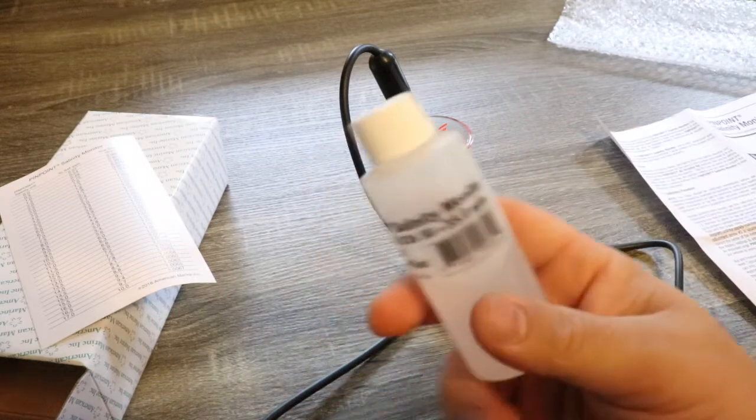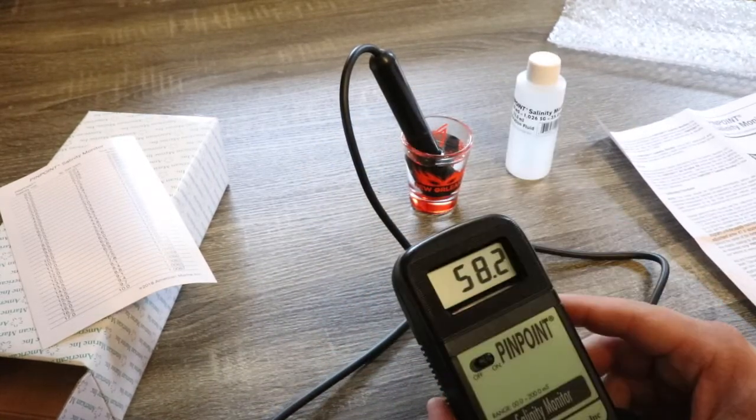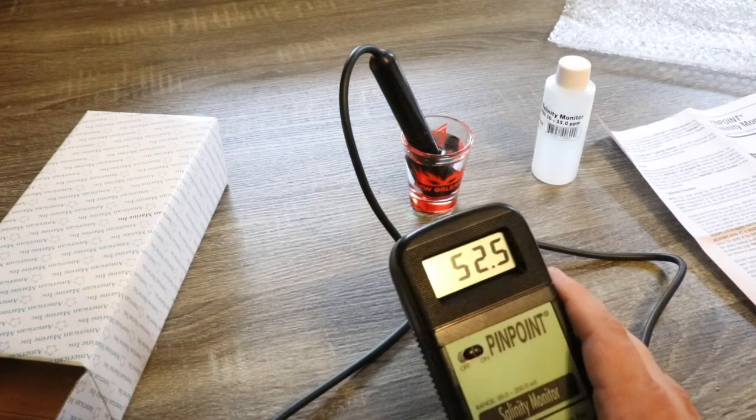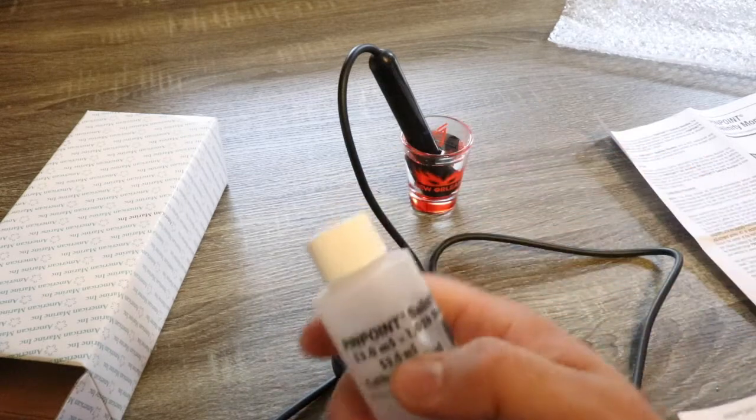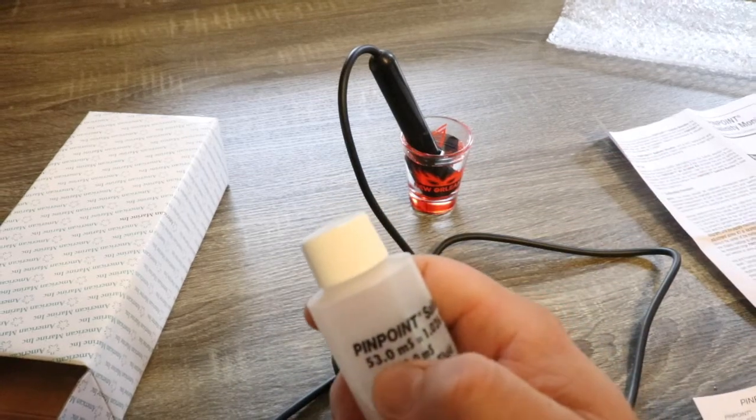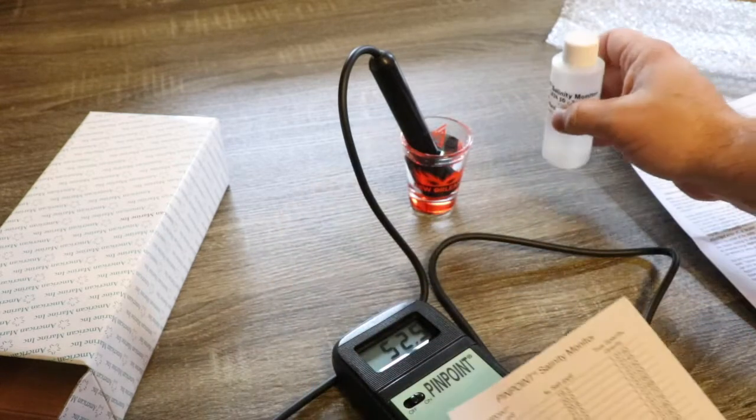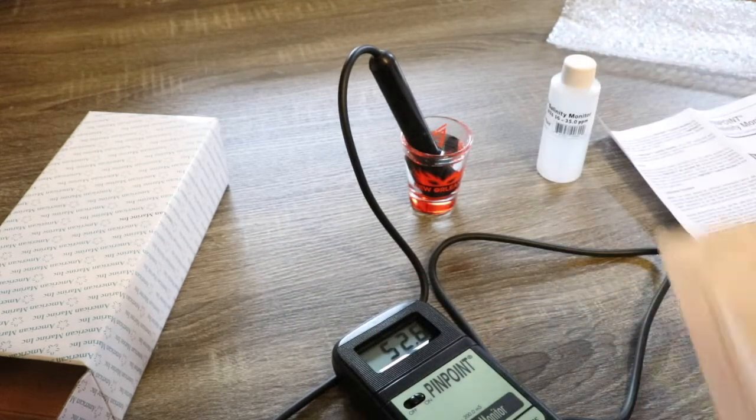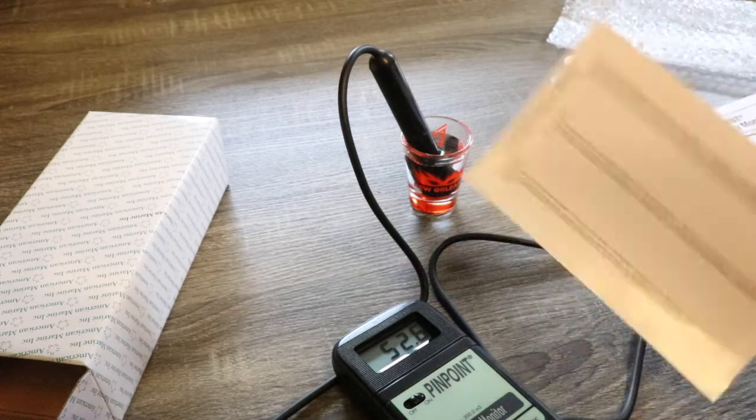We're going to turn it on and let it do its thing for a little bit. It's measuring 52.5, so our calibration fluid, which is what it's sitting in, should be at 53.0, which is going to give us the 1.026 specific gravity. This is still kind of moving around a little bit, so we're going to give it a couple more minutes just to hit that perfect temperature, and then we're going to go in the back and adjust this to the 53.0.